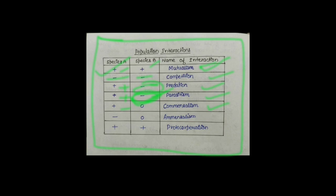Another one is Commensalism। Commensalism में एक Species को फायदा होगा, तो दूसरे Species में किसी तरह का कोई Effect नहीं होगा — वो Unaffected होगा। नहीं उसको कोई फायदा होगा, नहीं उसको कोई नुकसान होगा। उसी तरह next हमने Population Interaction पढ़ा — Amensalism। Amensalism में एक को नुकसान होता है, और दूसरे को ना कोई फायदा है, ना कोई नुकसान है।